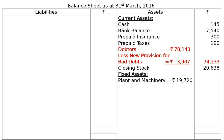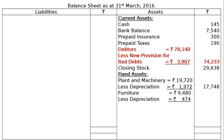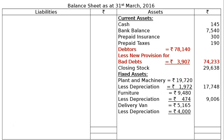Fixed assets: plant and machinery Rs. 19,720, less depreciation Rs. 1,972, giving Rs. 17,748. Furniture Rs. 9,480, less depreciation 5% Rs. 474, giving Rs. 9,006. Delivery van Rs. 5,165, less depreciation Rs. 4,000, giving Rs. 1,165. Building Rs. 28,000 with no depreciation. Goodwill Rs. 30,000. Total assets side of the balance sheet: Rs. 1,97,965.